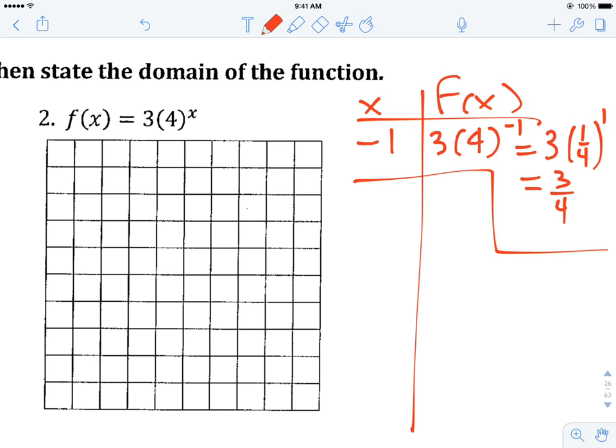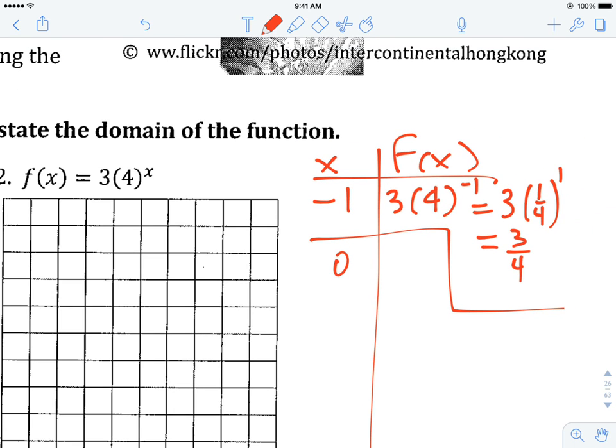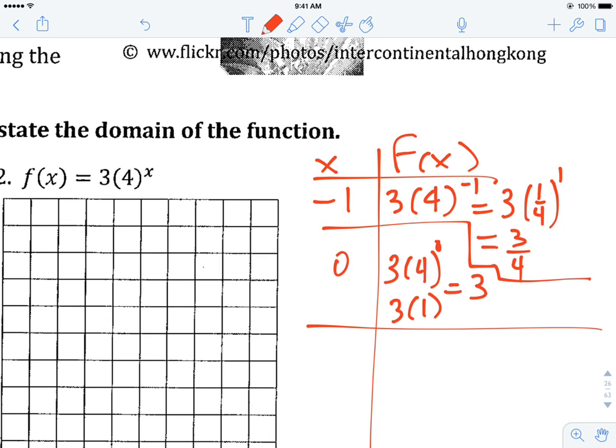Let's try 0. And looking at the value here would be 3 times 4 to the 0 power. 4 to the 0 power is 1, so it would be 3 times 1, which is just 3. And I think I'm going to clean this up a little bit. So this is the output 3 fourths when x is negative 1, the output of 3 when x is 0.